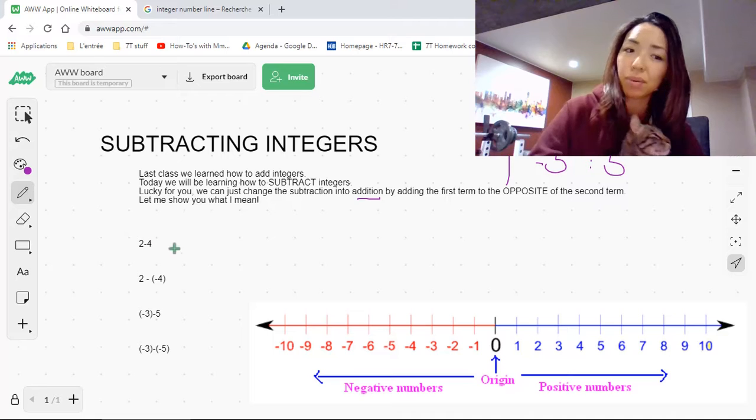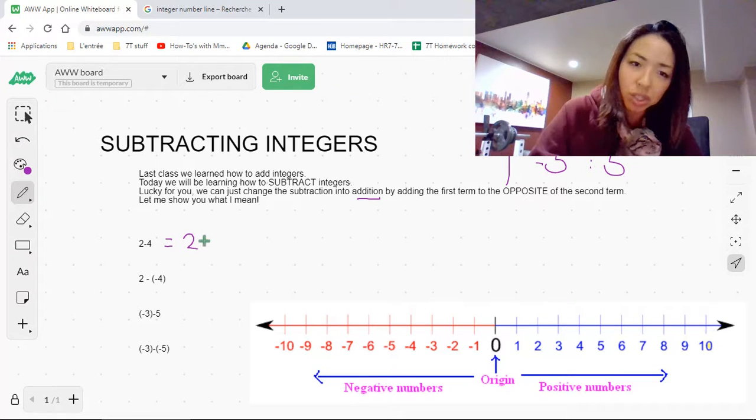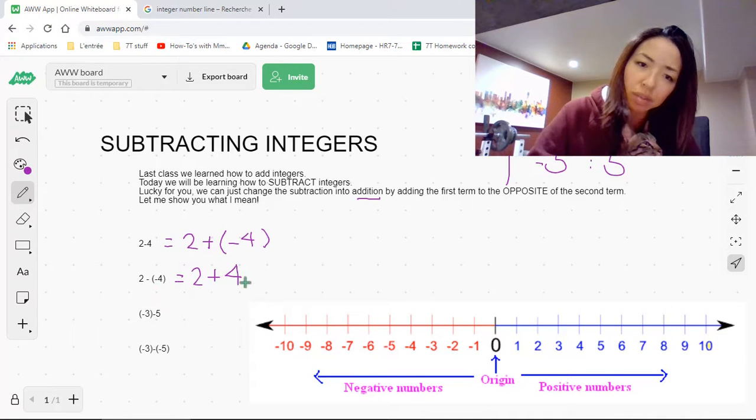So for 2 minus 4, you can do it by putting the first term in, and then now you can change it into an addition by adding it to the opposite. So this is a 4. The opposite of 4 would be negative 4. So we've changed it to addition by making the 4 into a negative 4. In the same way, we've got 2 minus negative 4. We're going to change it into an addition by making the negative 4 into the opposite. And the opposite of negative 4 is plus 4.